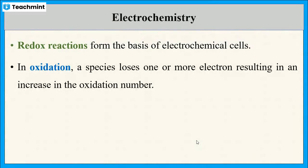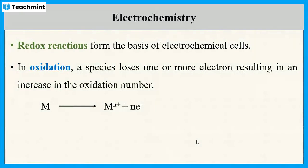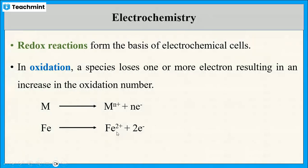During an oxidation reaction, removal of electrons takes place — that means a species loses one or more electrons, and there is an increase in the oxidation number of the metal. The reaction is: metal converts to its ionic form with the liberation of electrons. For example, iron converts to its Fe²⁺ state with the liberation of electrons.